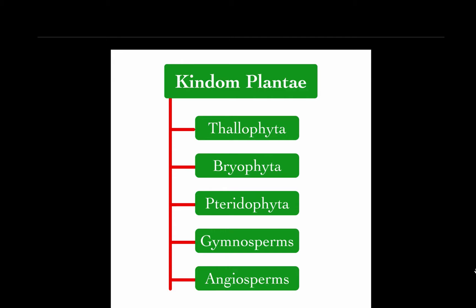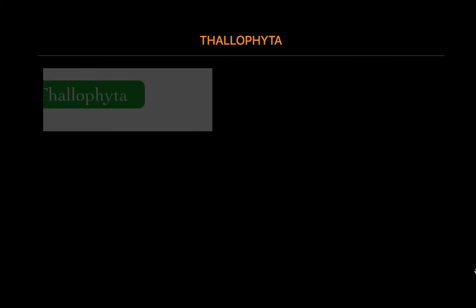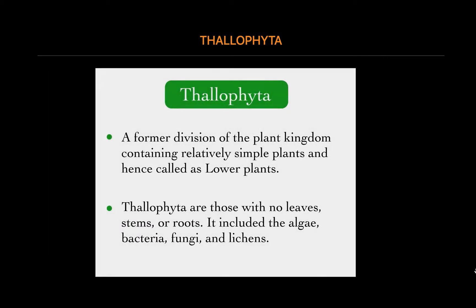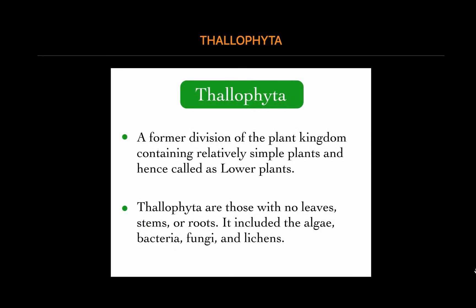Now let's study about the first subgroup of Kingdom Plantae, that is Thalophyta. Thalophyta is the first division of the plant kingdom. Thalophytes are a polyphyletic group of non-mobile organisms that are grouped together on the basis of similarity of characteristics but do not share a common ancestor.